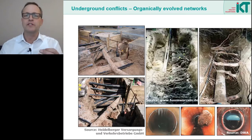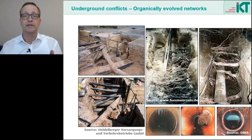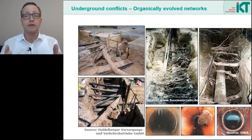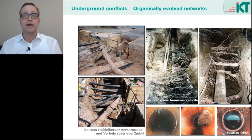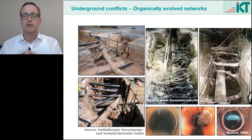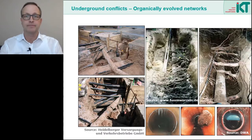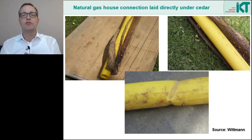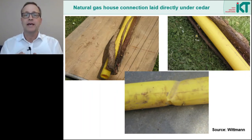If roots grow near sewers and pipelines, many interactions are possible. Roots can grow into the pipe trench and grow around the pipe from the outside, for example pulling on the pipe under wind load. Roots can also grow into the sewers and pipes through pipe joints or through leaking lateral connections. The cross section is then often completely blocked, which is a huge problem for operational safety. Here we see how a root has grown around a gas pipeline, following the surface of the pipeline and completely enclosing it in some areas.